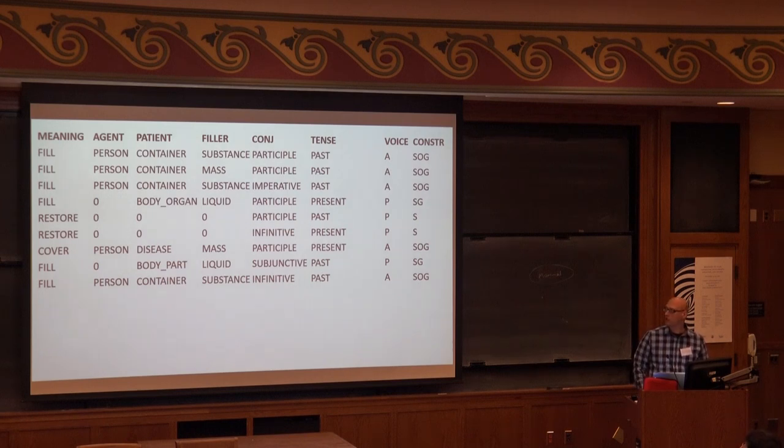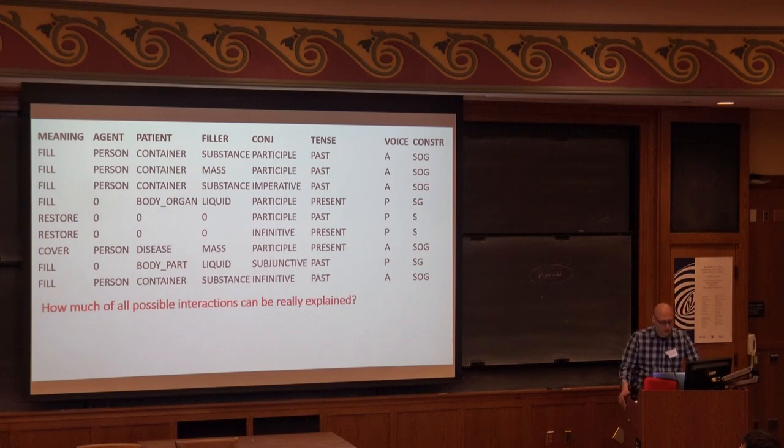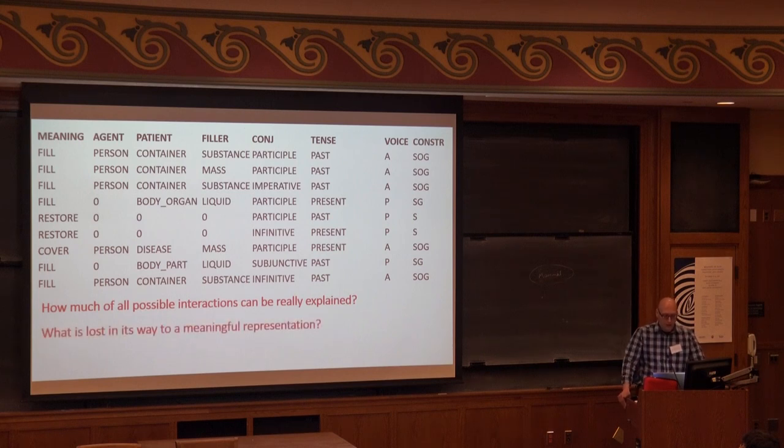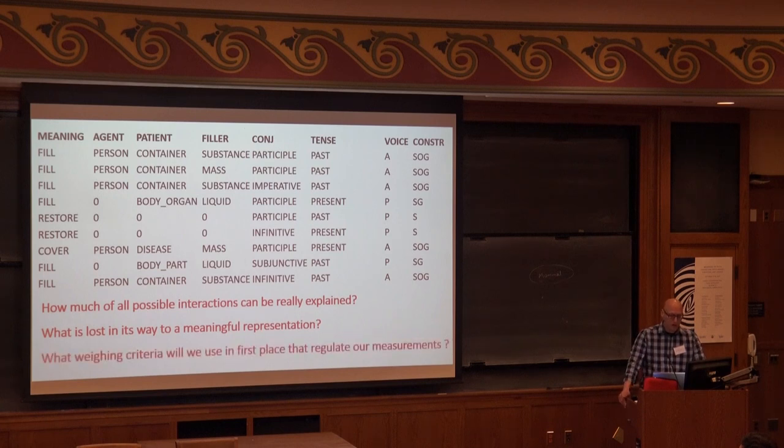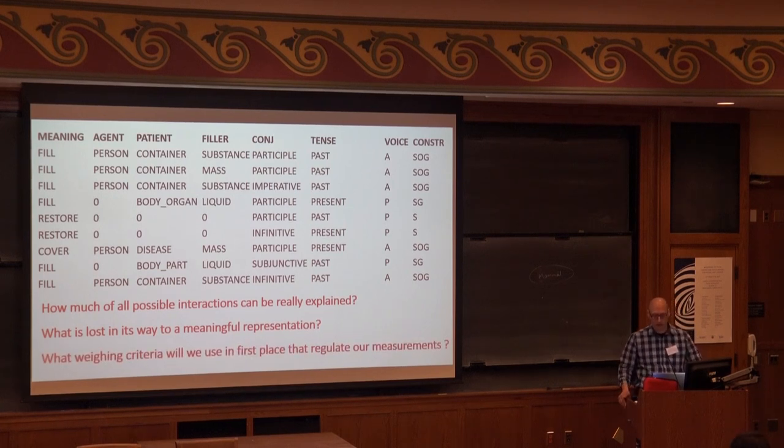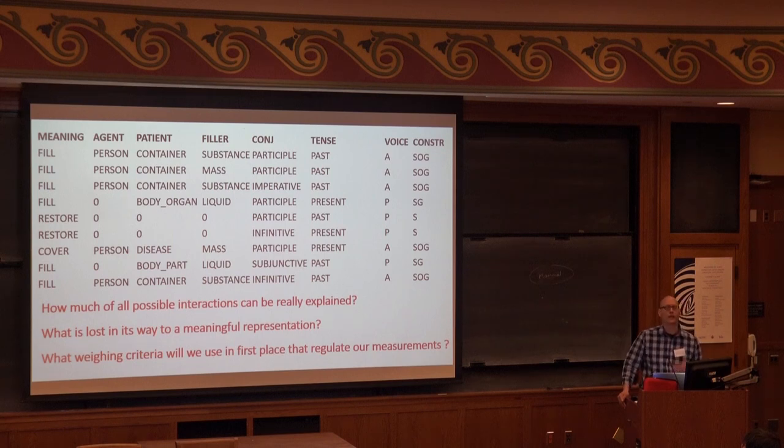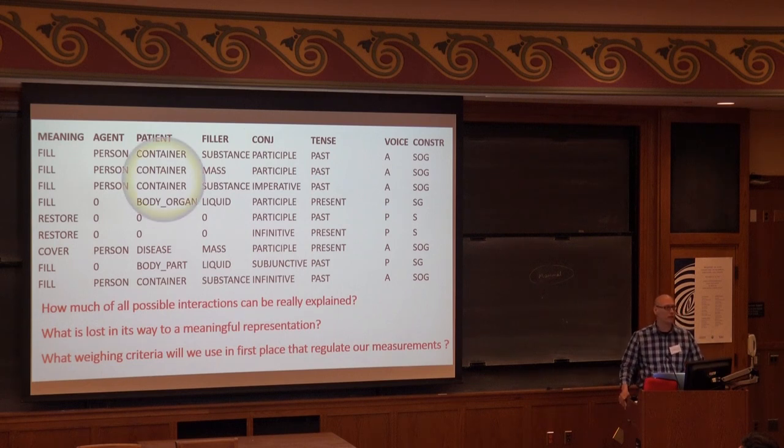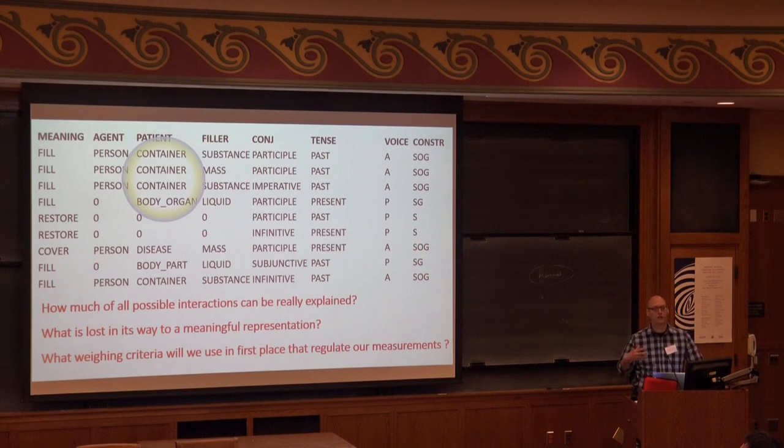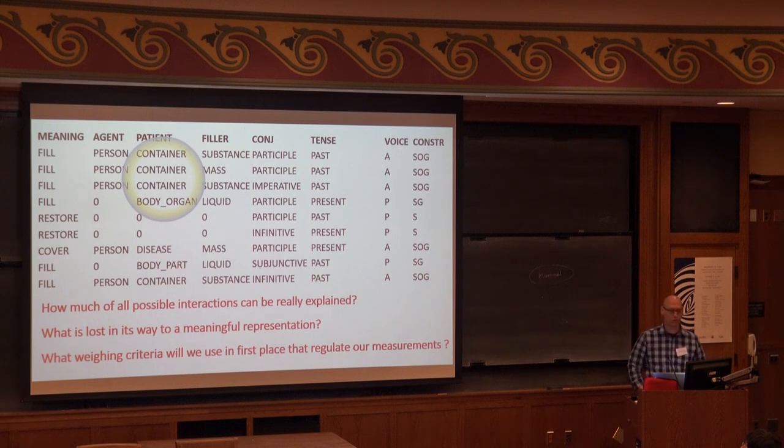In this connection, there are three questions that arise. How much of all possible interactions can be really explained? What is lost in the way to a meaningful representation? Too much is lost. And third, what weight criteria will we use in the first place to regulate our measurements? What is the underlying linguistic theory that we are using? As you can see here, for example, I have a rather fine-grained distinction between the semantic participants. And this is not an obvious decision. It has to do with what you define as the schematic motivation behind the senses, for example in the semantic participants, as well as the relevance of these core sets.